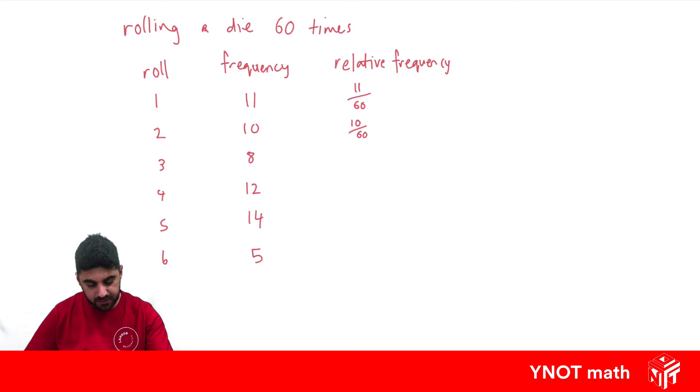This one's 10 over 60, 8 over 60, 12 over 60, 14 over 60, and 5 over 60. Now we can just simplify our fractions.